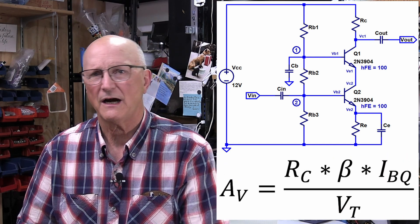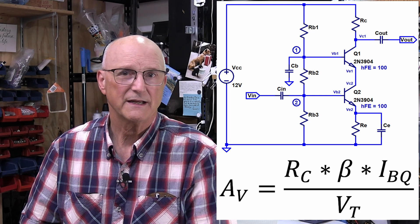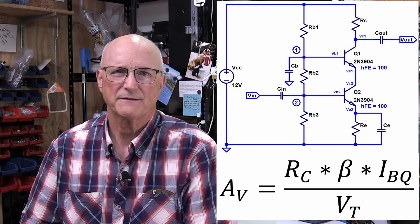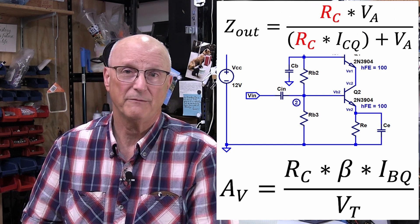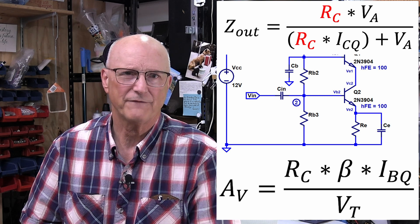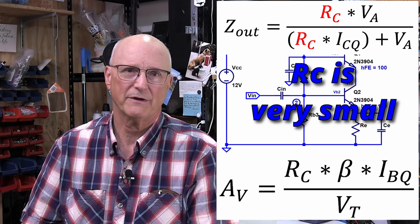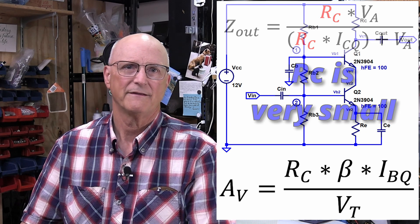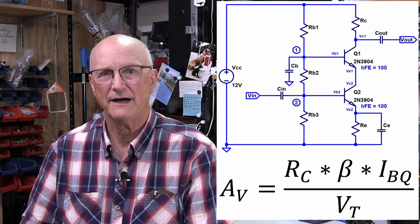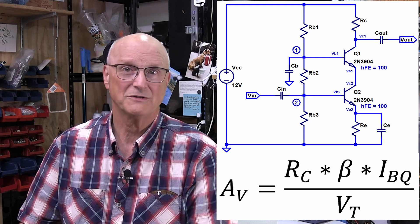Here is the gain equation for a common base amplifier with the source resistance approaching zero. This source resistance is the output impedance of the common emitter amplifier. We revisit the formula for the output impedance of the common emitter amplifier, and we can see that the output impedance is highly dependent on the value of its collector resistor. As mentioned before, this is essentially zero because it is the very low input impedance of the common base amplifier. Thus, it is safe to use the simplified equation for the common base amplifier as the gain for the entire cascode amplifier, and as you will see in the next video, this ends up being a pretty close approximation.